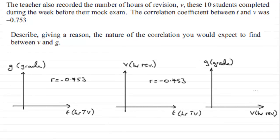Now in this last part of the question, we're told that the teacher also recorded the number of hours revision V these 10 students completed during the week before their mock exam. And the correlation coefficient between T and V was minus 0.753. And we've got to describe giving a reason the nature of the correlation you would expect to find between V and G.